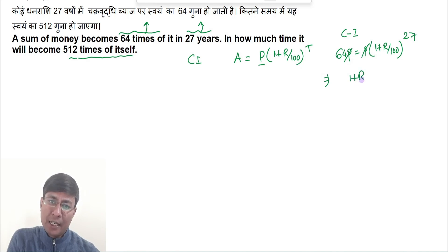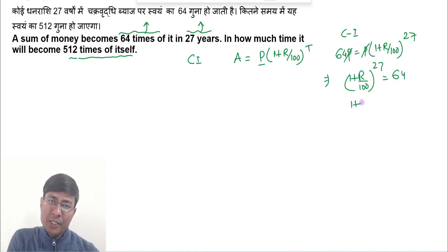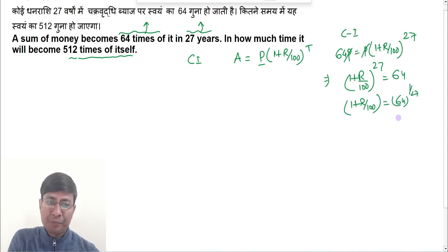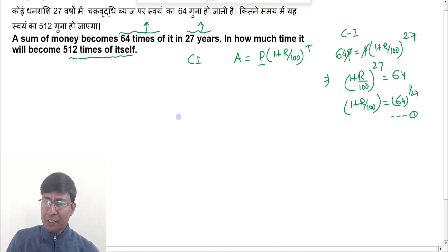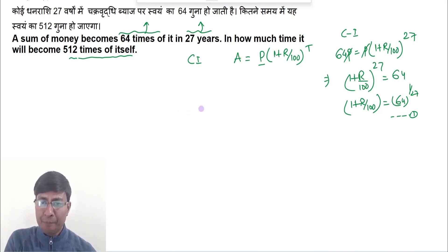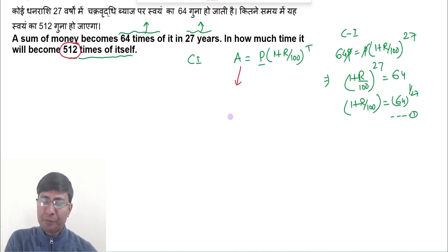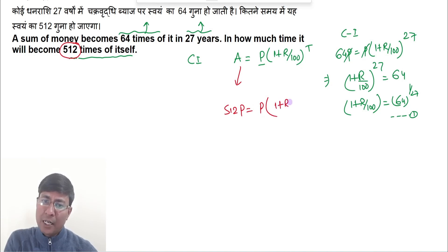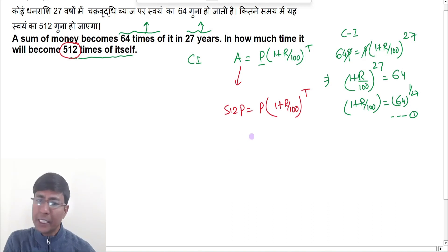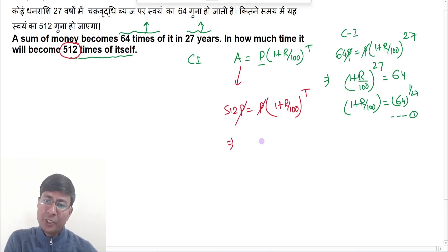This simplifies to (1 + r/100)^27 = 64, which equals 64^(1/2)... Now for the 512 times case, we write: 512P = P × (1 + r/100)^T, which gives us (1 + r/100)^T = 512.